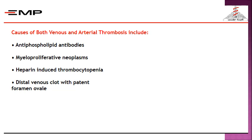What are the causes of both venous and arterial thrombosis? Antiphospholipid antibody syndrome is one of them. Others include myeloproliferative neoplasms such as polycythemia rubra vera or essential thrombocythemia, heparin-induced thrombocytopenia, and distal venous clots with patent foramen ovale — where thrombus fragments pass through the foramen ovale to obstruct the arterial side.